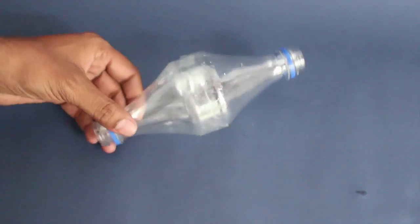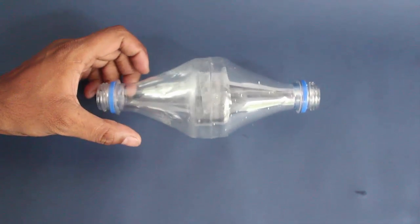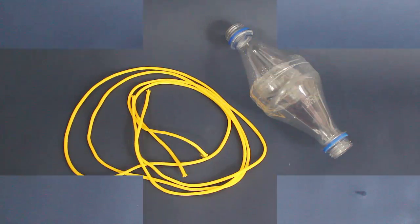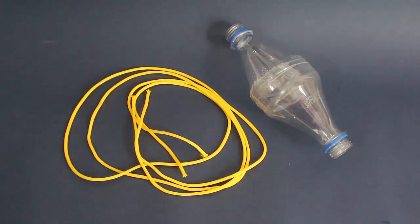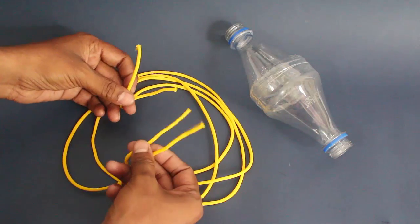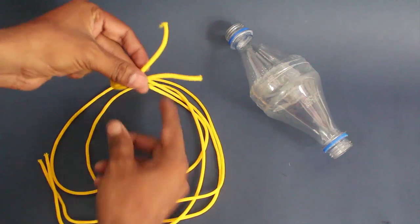Then take two nylon strings, both strings about 3 meters in length, and weave both these strings through the double cone.